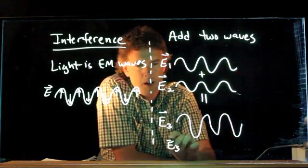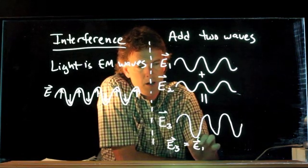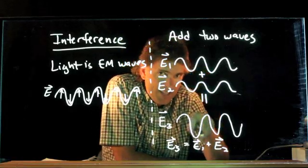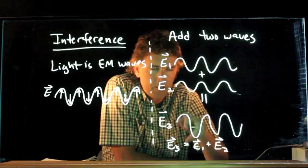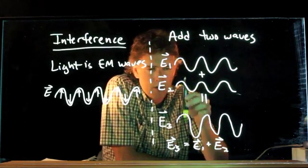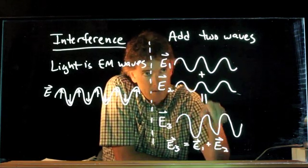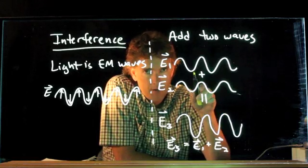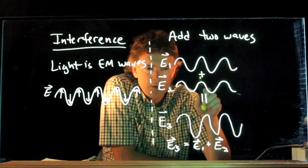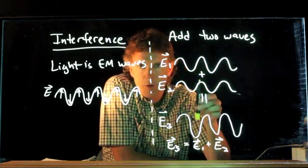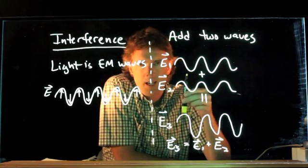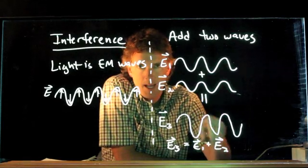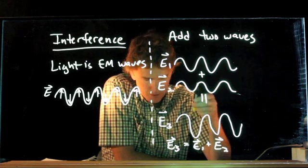We have to remember that E1 and E2 are vector fields. They have a particular direction associated with them. So this idea of adding two waves together is called the principle of linear superposition. Just like when we were talking last term about forces, we could add forces as vectors to get a resultant force. Now we can add electric fields as vectors to get a resultant electric field. This is the principle of superposition.